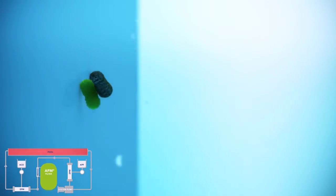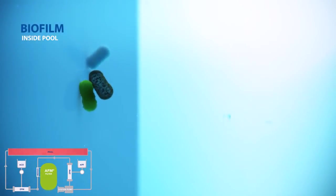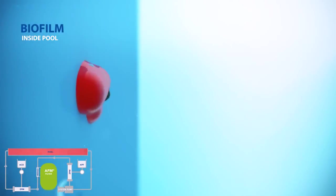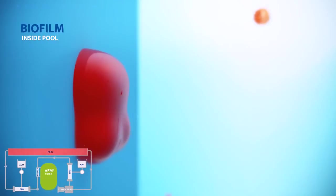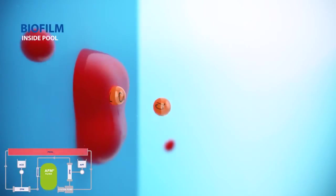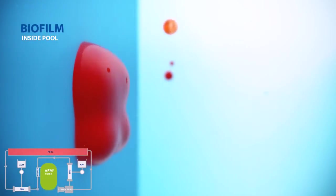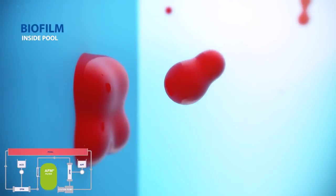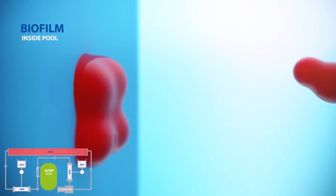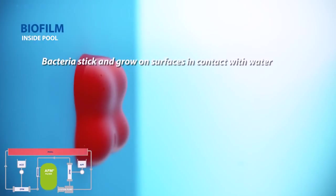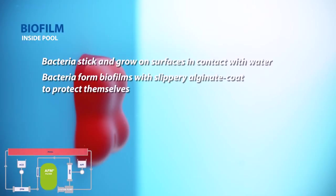All pools have a slippery biofilm grease because bacteria stick and grow on all surfaces in contact with water, like the pool walls and pipework, but most of all the sand in the sand filters because this is the largest surface area in contact with the water. Bacteria form biofilms with an alginate jelly covering which protects them from chlorine, and even high concentrations of chlorine will not kill them.